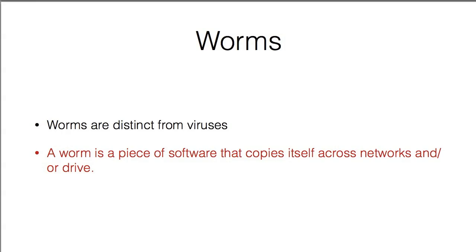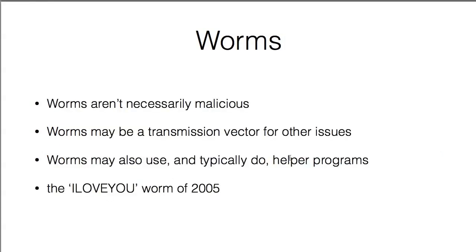You can have both — there's the famous line from the movie Hackers where a character says 'a worm and a virus.' That's not uncommon; typically a piece of code hides itself in software, gets executed, and copies itself across drives. Worms aren't necessarily malicious — there are so-called 'helper worms' that roam the internet — but they are frequently a transmission vector for other issues.